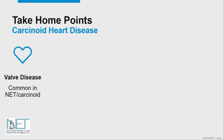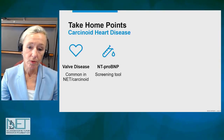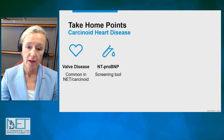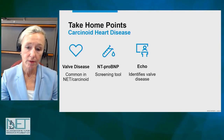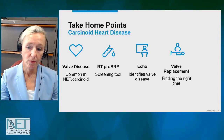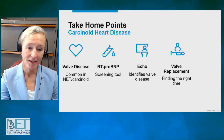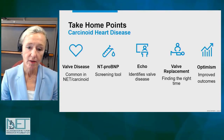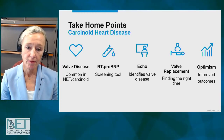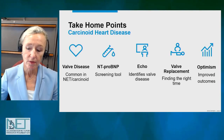Take-home points: remember that carcinoid doesn't just affect the liver — it can affect the heart, and carcinoid heart disease occurs quite frequently. A screening test is a hormone called BNP or NT-proBNP, an easy blood test that can give a clue to the possible diagnosis of carcinoid heart disease. But the ultimate diagnosis is made by echocardiography, which identifies the valve disease and determines what treatment is required. Medical therapy can be used, but ultimately the best treatment of choice is valve replacement surgery. Finding the right time is something we're still working on identifying carefully. Over the years, all of the interventions being done for patients with neuroendocrine tumors have resulted in great optimism and marked improvement in outcomes, both from heart disease and in general.